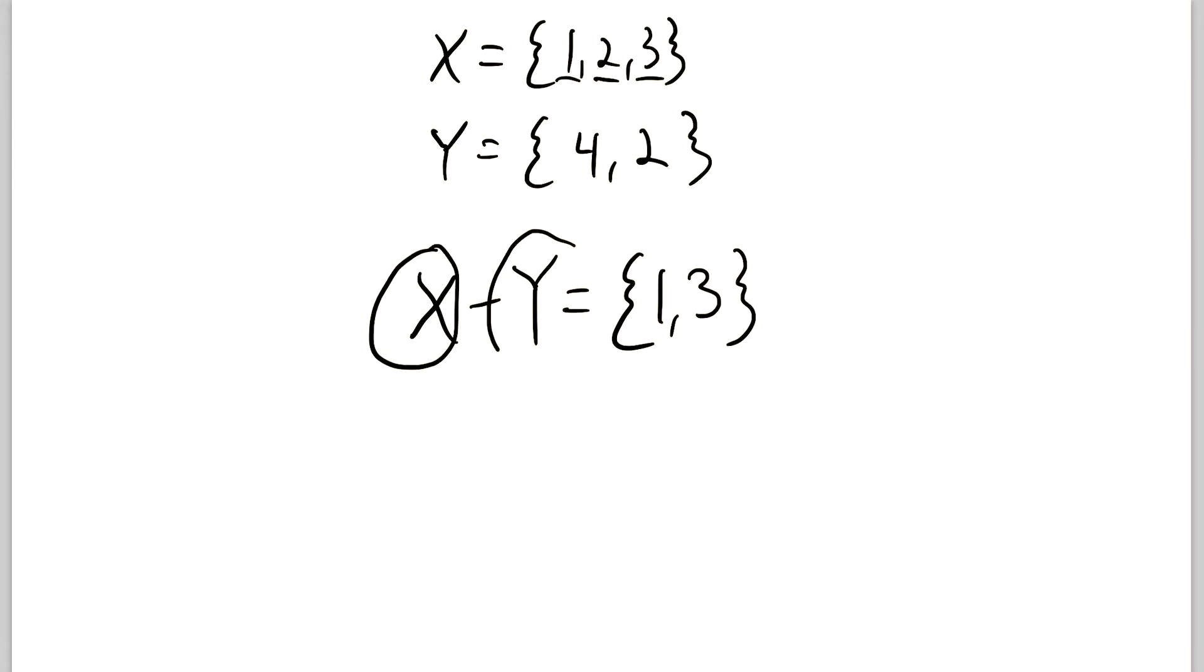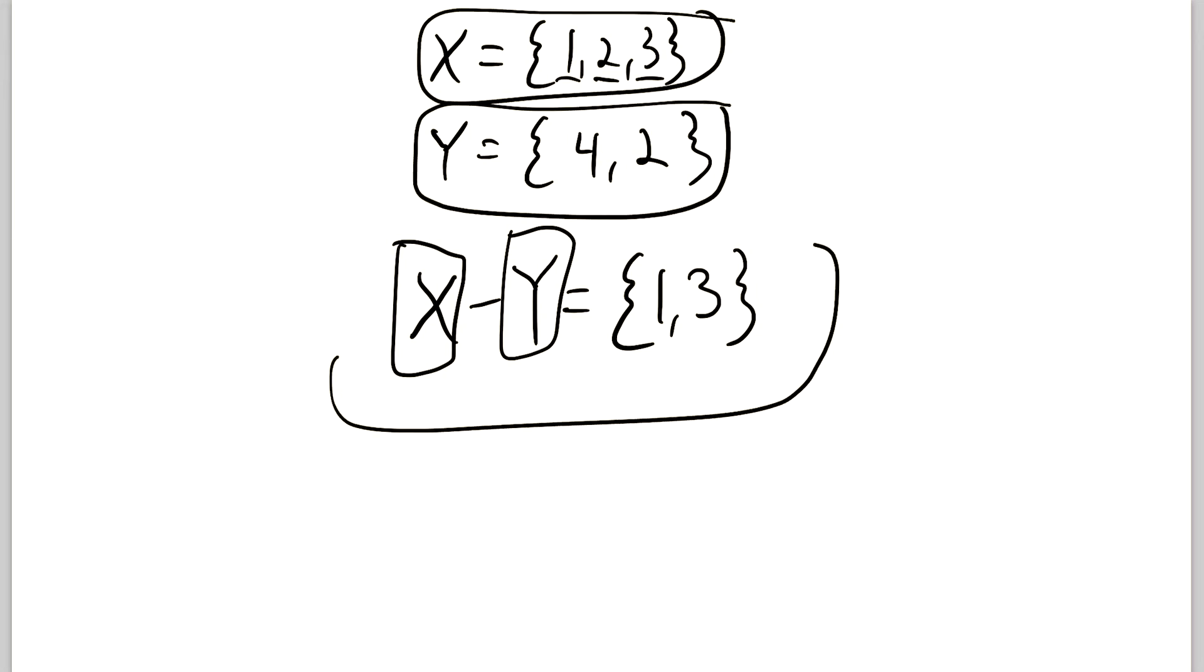If you have a set X and you subtract the set Y, then you just take all the elements of Y out of X, and that's what you're left with in X minus Y.